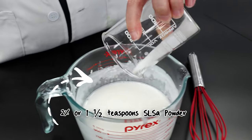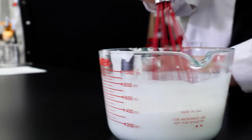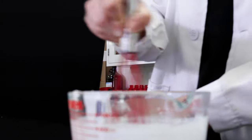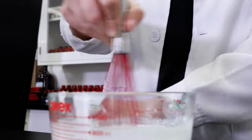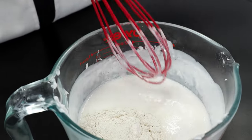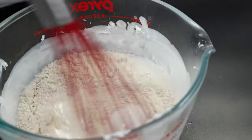First, add in the sodium lauryl sulfate acetate. This is a gentle surfactant that will help boost the bubbles in our soap and give a foamy lather that's perfect for shaving. Whisk it into the soap base. With that stirred in, you can follow up with the kaolin clay, which will make the bars really smooth and help them glide across the skin.